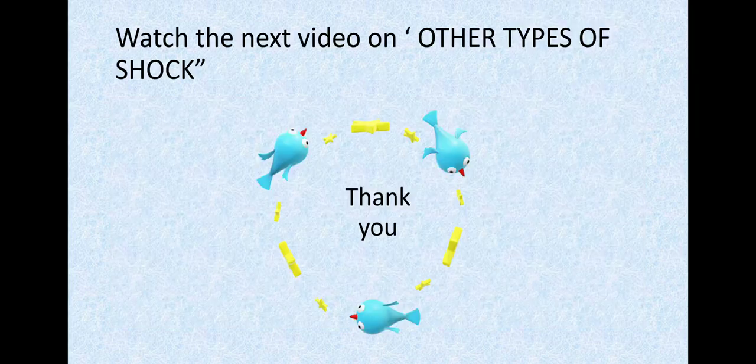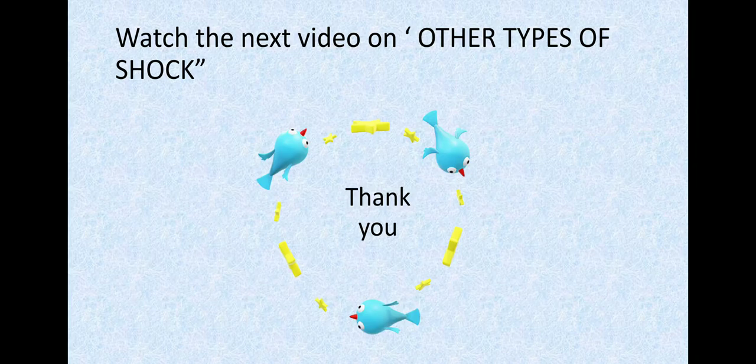For the next video, wait for the other types of shock. So far we've discussed hypovolemic type: hemorrhagic or plasma loss, burn shock, traumatic shock, surgical shock. Other types will be discussed later. Thank you so much. Hope this video was useful. Stay connected.